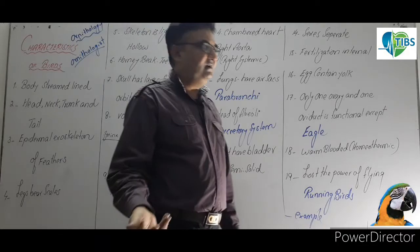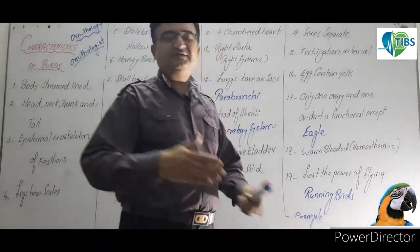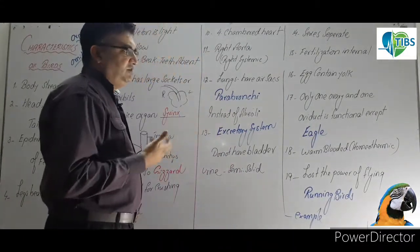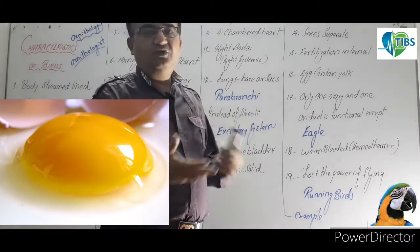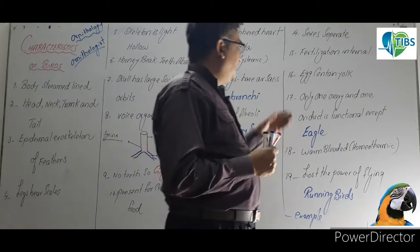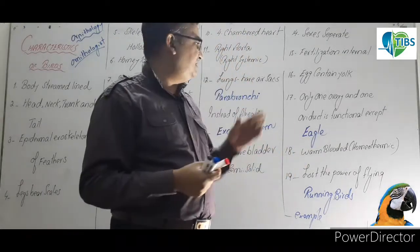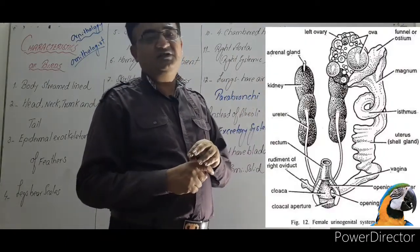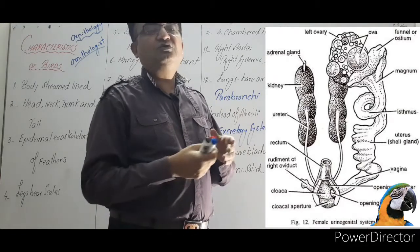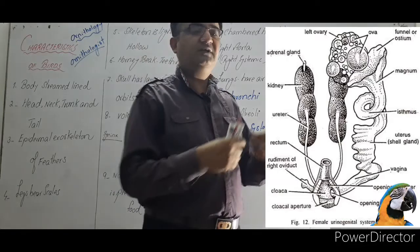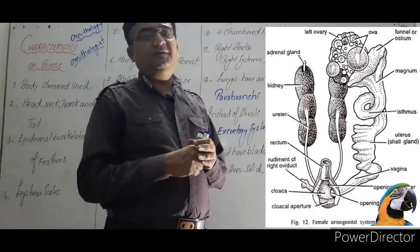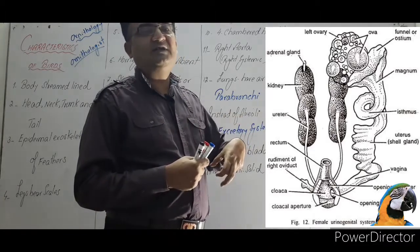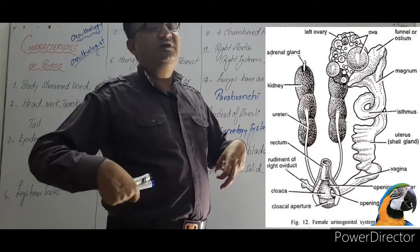Males will be separate, females separate. Fertilization is internal. As animals evolved from water to land, fertilization became internal. The egg has yolk which provides stored food to the embryo. Very important point: they have one ovary and one oviduct that is functional. When female birds are born immature, they have both ovaries and both oviducts. But with time, the left ovary and left oviduct become functional, while the right ovary and right oviduct undergo regression.